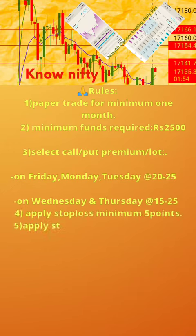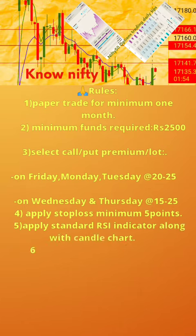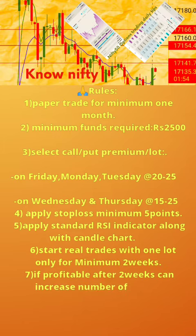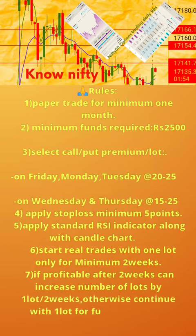4. Apply stop loss minimum 5 points. 5. Apply standard RSI indicator along with candle chart. 6. Start real trades with one lot only for minimum 2 weeks. 7. If profitable after 2 weeks, increase number of lots by 1 lot for 2 weeks; otherwise continue with one lot for a further 2 weeks.